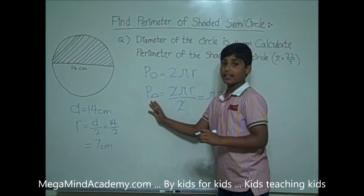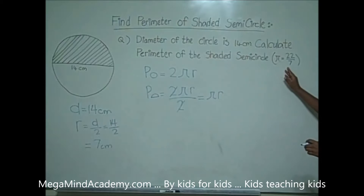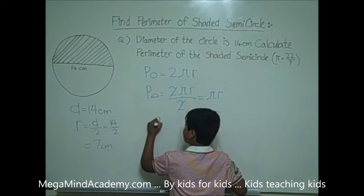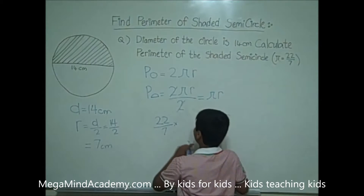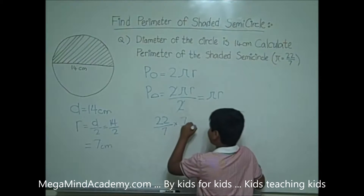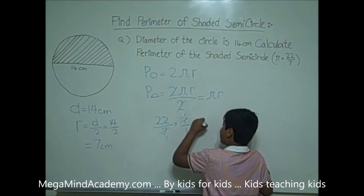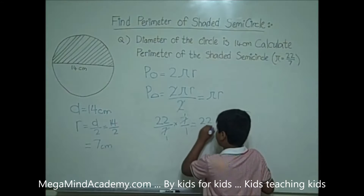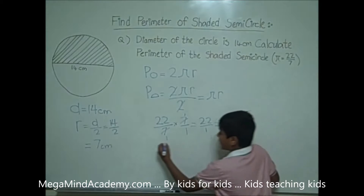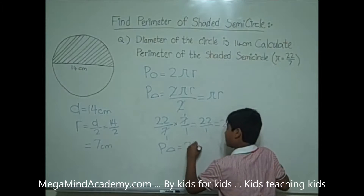Let's find what the perimeter of the semicircle is. Pi is equal to 22 over 7. So that means 22 over 7 times the radius, which is 7 centimeters over 1. The 7s cancel out, both become 1. So we have 22 times 1 over 1 times 1, which equals 22 centimeters. The perimeter of the semicircle is equal to 22 centimeters.